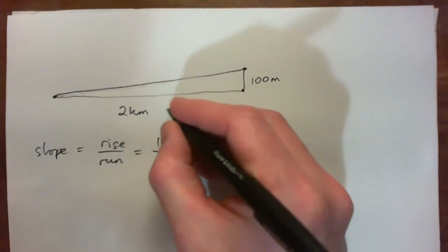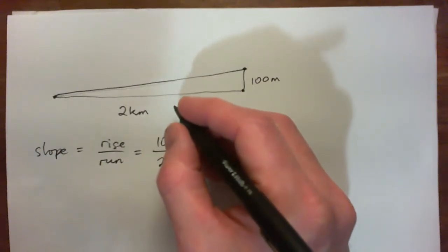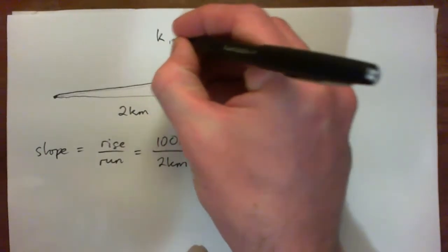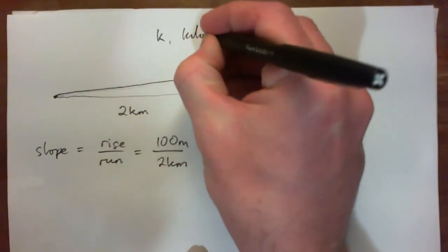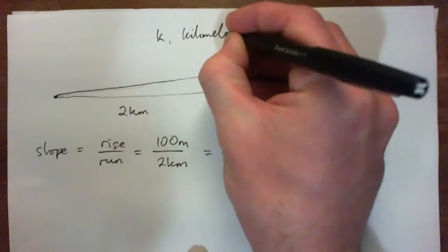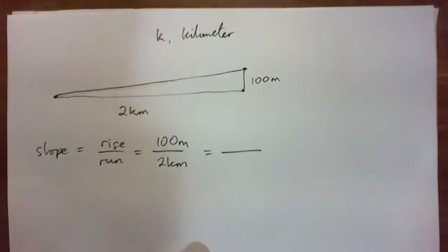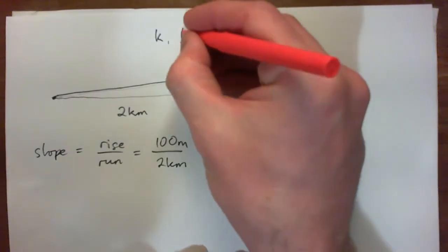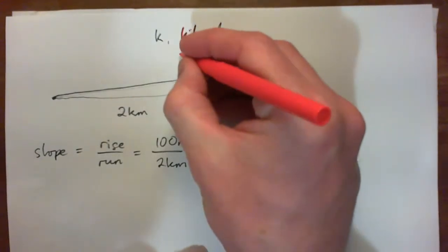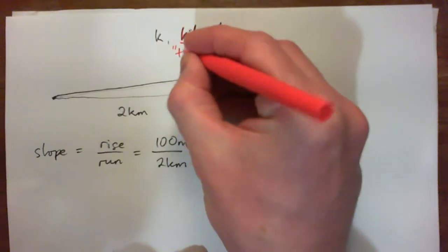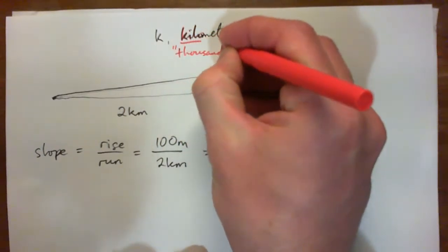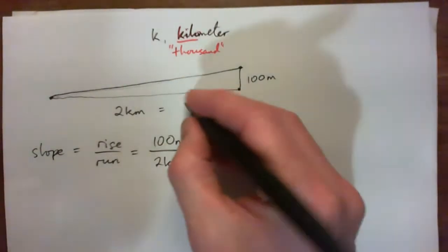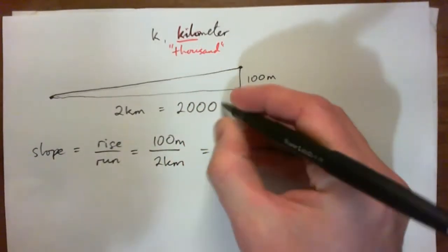So 2km is 2,000 meters because kilo, or kilo in kilometer, that kilo is your Latin word for 1,000. So 2km is 2,000 meters.